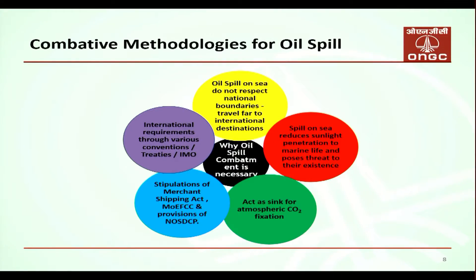These are the different comparative methodologies for oil spill response. An important point: oil spill does not confine to one particular national boundary — it can travel to international boundaries. International requirements through various conventions and treaties, including International Maritime Organization requirements, apply. Spill on the sea reduces sunlight penetration to marine life and can have a devastating impact. Guidelines include the Merchant Shipping Act, MoEFCC guidelines, and NOS DCP.